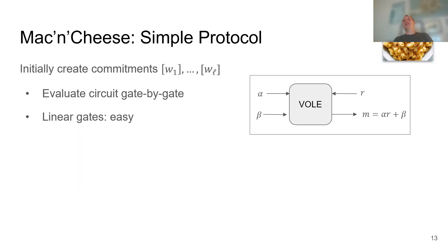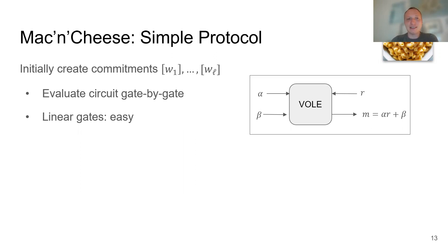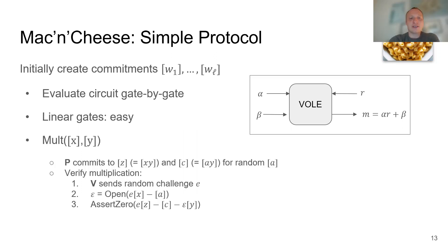Combining the commit-and-prove paradigm with vector OLE as commitments gives us the simple Mac and Cheese protocol. We use vector OLE to set up commitments to the witness, then use the homomorphism to evaluate the circuit gate by gate. Linear gates are simple. We then optimize how to prove multiplication gates.